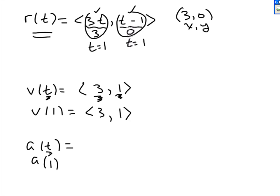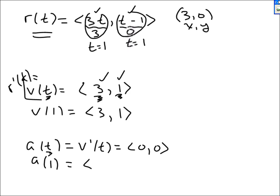For a of t, you take the derivative of v to get a. The derivative of 3 is 0, and the derivative of 1 is 0. So wherever I plug in 1 for t, I get 0 for both components. Those are my answers.